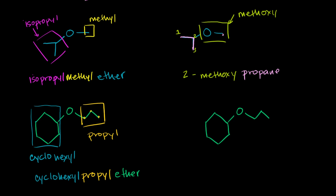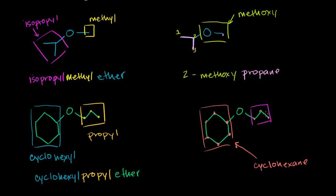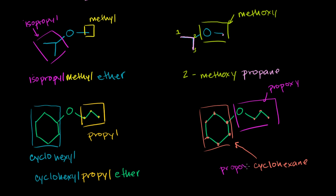For the IUPAC name, you look for the longest carbon chain. The cyclohexane has six carbons and the other chain has only three, so the cyclohexane is our backbone. The remaining three-carbon chain with the oxygen attached we call a propoxy group — propyl plus oxy. You don't need to number it because it can attach to any of the equivalent carbons on the ring, so you call this propoxycyclohexane. But again, the common name is what you're more likely to see.